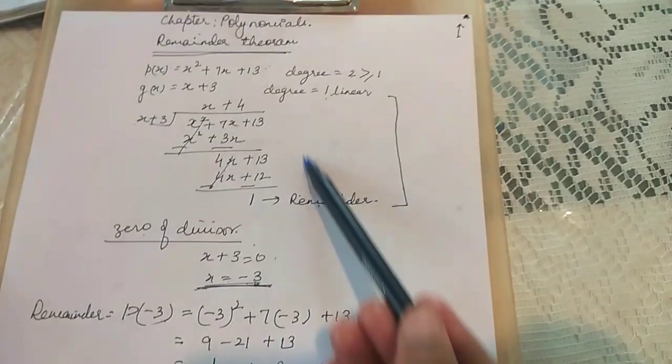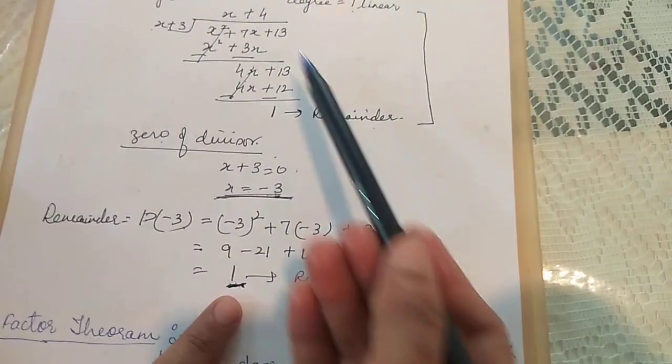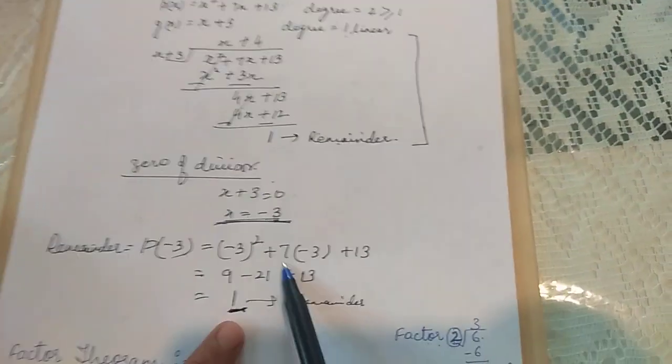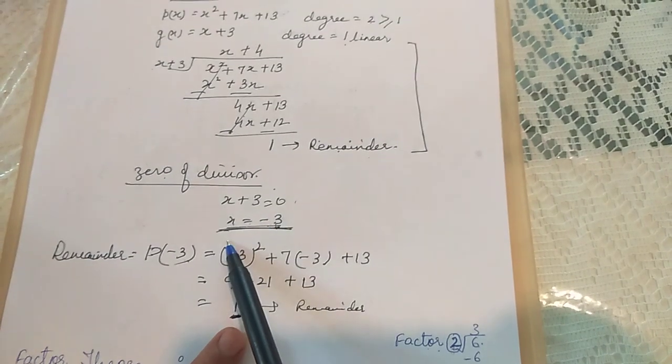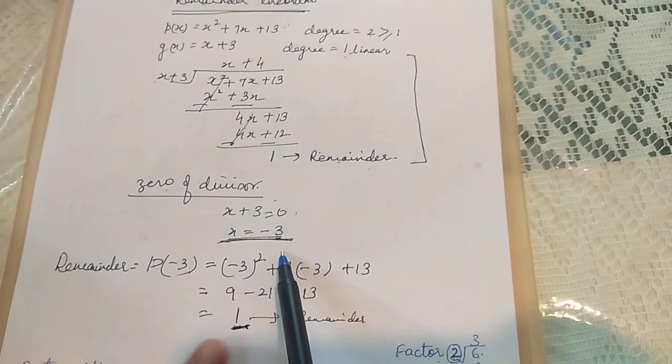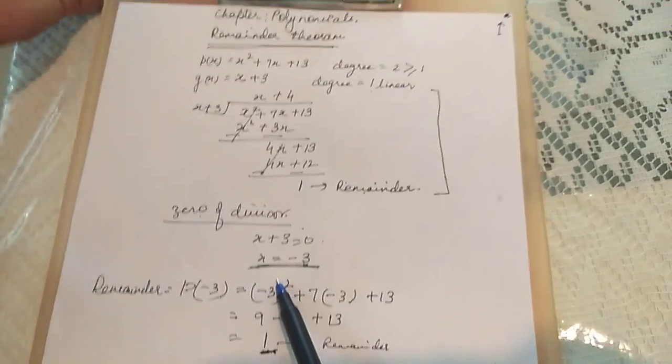So instead of going for long division what we do is we find the zero of the divisor, substitute the zero in the given polynomial, that becomes the remainder. This is the statement of the remainder theorem.